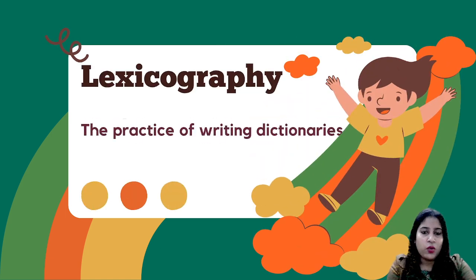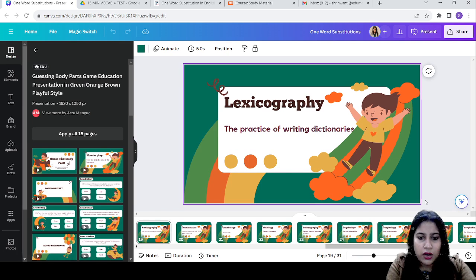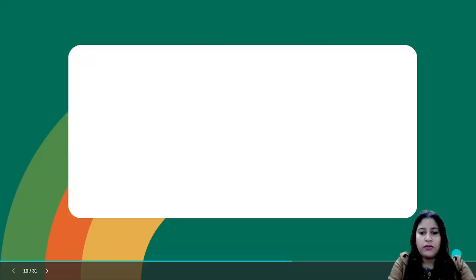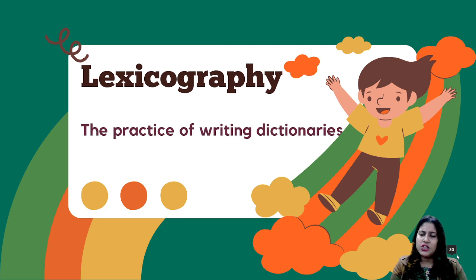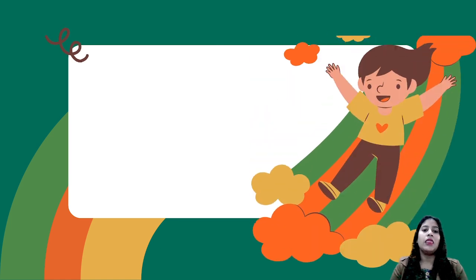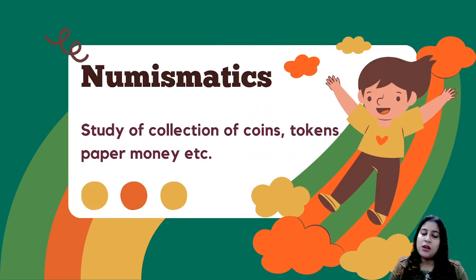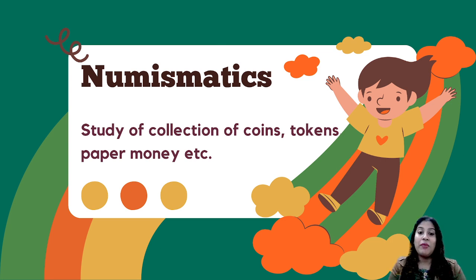Lexicography — we are at number 9. Lexicography means the practice of writing dictionaries. Dictionaries have all A to Z words and meanings, and the practice of writing them is called lexicography. Numismatics — the study and collection of coins, tokens, paper money, etc. The study of collecting coins, tokens, and paper money is called numismatics.